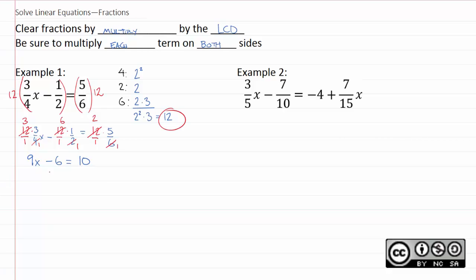And of course, we just do the same things we've been doing then. Add six to both sides. We'll get that nine x equals sixteen. And then of course we divide by nine. And we get here that x equals sixteen over nine.